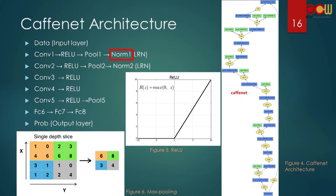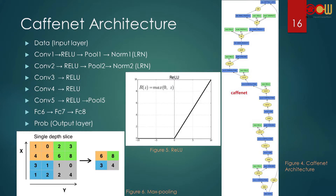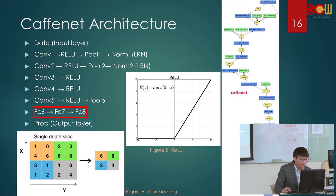The norm layers in CaffeNet means Local Response Normalization (LRN). This layer implements lateral inhibition. We use it because when the activation is ReLU, the output values are unbounded — they can grow bigger and bigger. So we use the LRN layer to normalize the values coming out of ReLU.